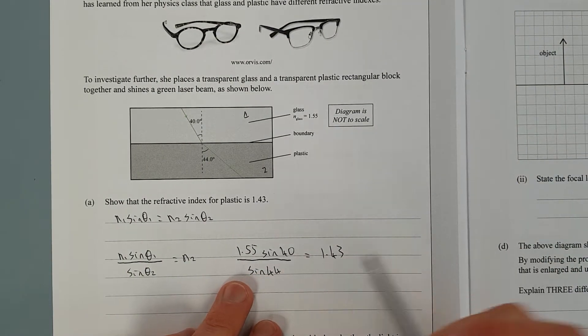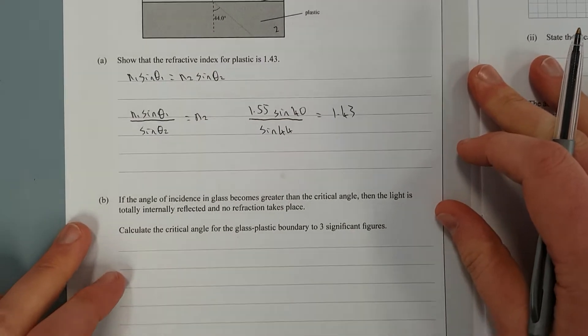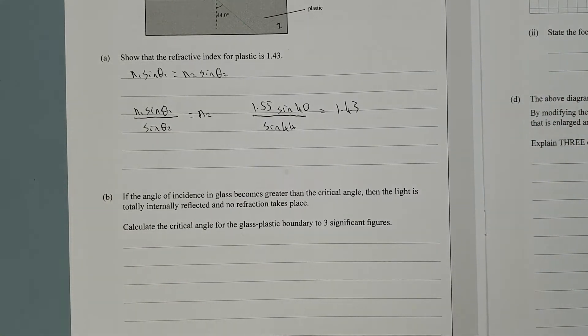If your calculator is not in degrees, you'll have a bad time. If the angle of incidence in the glass becomes greater than the critical angle, then the light is totally internally reflected and no refraction takes place. Calculate the critical angle for the glass plastic boundary to three significant figures.